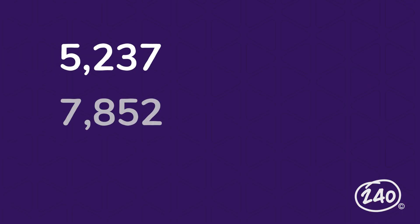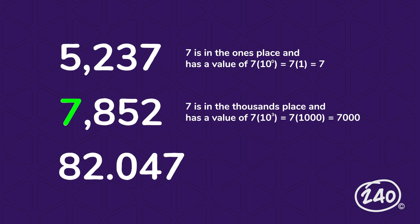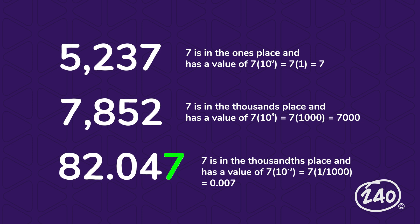For example, the digit 7 appears in each of these three numbers, but it holds a different value in each. In 5,237, 7 is in the ones place and has the value of 7. In 7,852, 7 is in the thousands place and has a value of 7,000. And in 82 and 47 thousandths, 7 is in the thousandths place and has a value of 0.007.